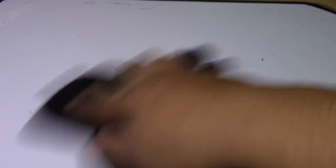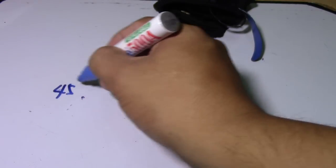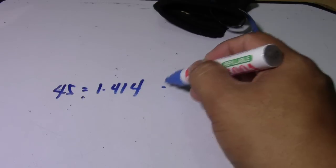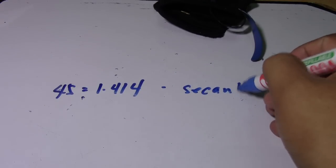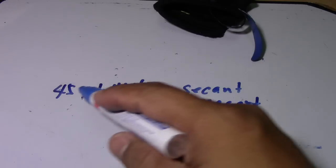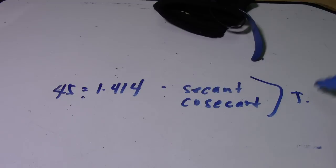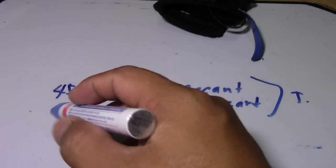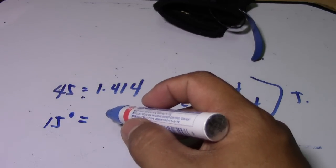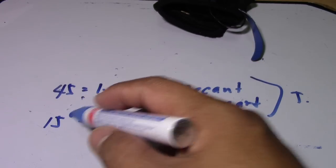So, for 45 degrees the multiplier is 1.4141 — this is the secant, and the cosecant is the same. Use 1.414 to get the travel for 45 degrees. Now let's say we have 15 degrees — for 15 degrees we will get the travel using a different multiplier.